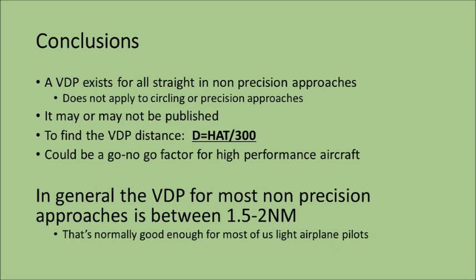For instance, the published minimums on the approach we looked at a few minutes ago was one nautical mile of visibility. Well, if you're flying a higher performance airplane and you really need a three-degree glide angle to safely land that airplane on a short runway, then you may find that your real minimums are two-mile visibility. Because if you're not established on a three-degree glide angle by two miles from the runway, you're just not going to be able to make the landing. For some airplanes, this is a major go/no-go factor that should be considered.